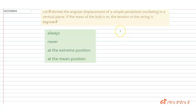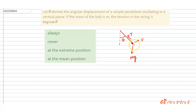Drawing the free body diagram at any instant when the angle is theta: the tension force acts towards the center, mg acts downward, and the pendulum has some velocity v in the tangential direction.